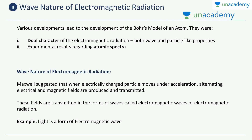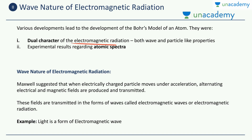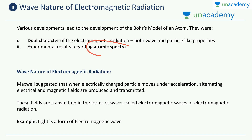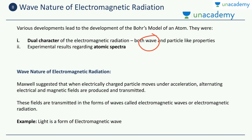Before we go on to the Bohr's model, there are a lot of concepts which were used by Niels Bohr to develop his model. We will study two of such concepts: the dual character of electromagnetic radiation — meaning it has both the character of a wave and a particle. This video is about the wave character; the next video will cover the particle character. The second concept Bohr used is the experimental results regarding the atomic spectra, which we will also cover in the next video.